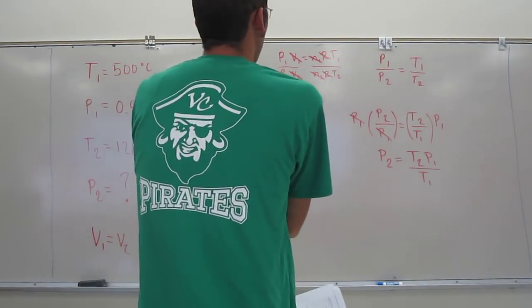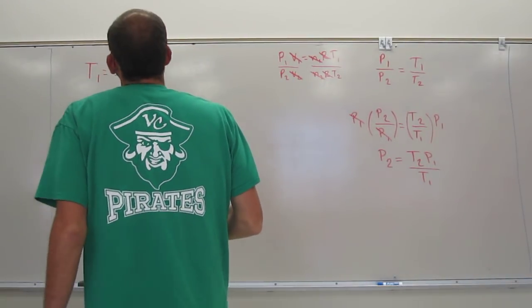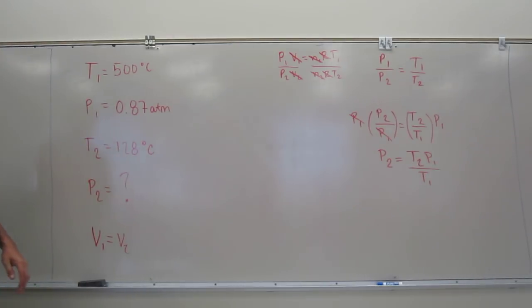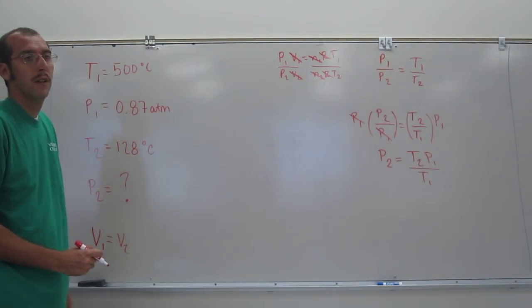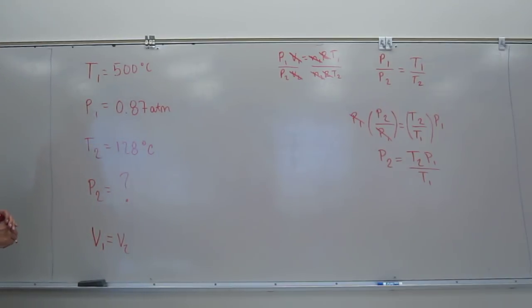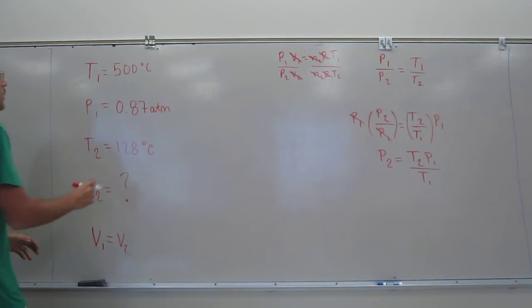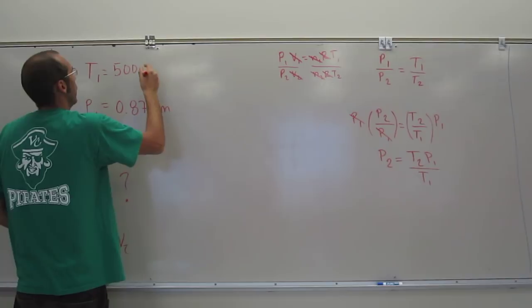And you want to think about it this way. So the temperature decreased. Would you expect the pressure to increase or decrease? Decrease. You would expect it to decrease. So you would think that it would be less than 0.87. The other thing that you want to do is get this in Kelvin. So do you remember how to do that? Just add 273.